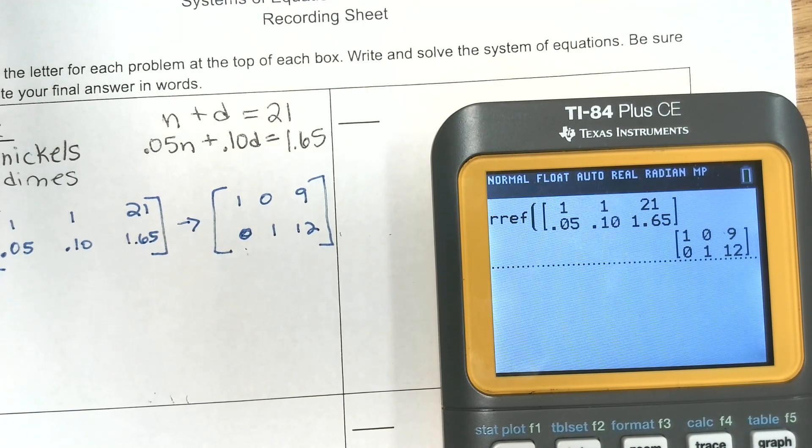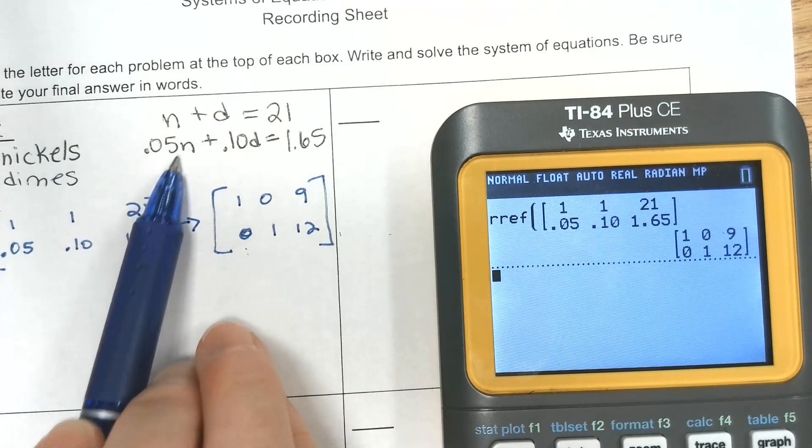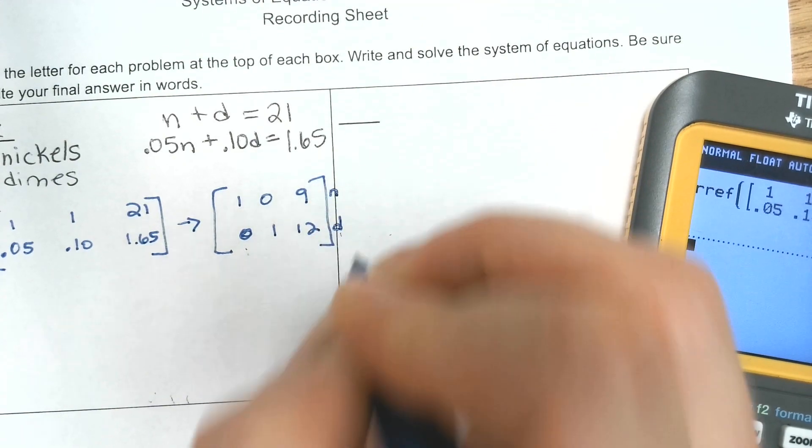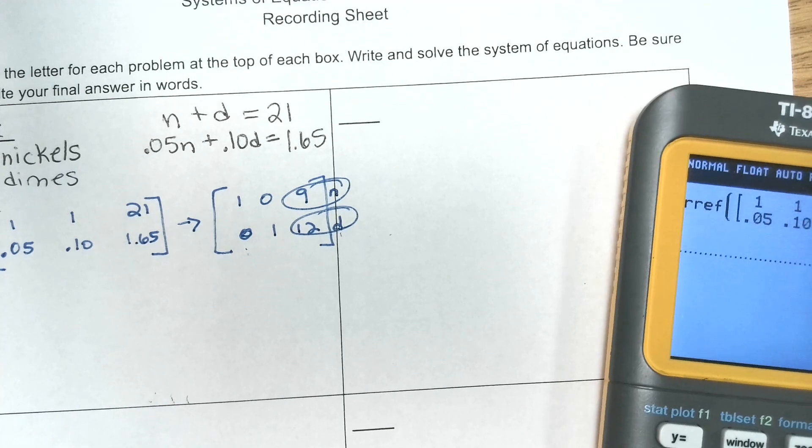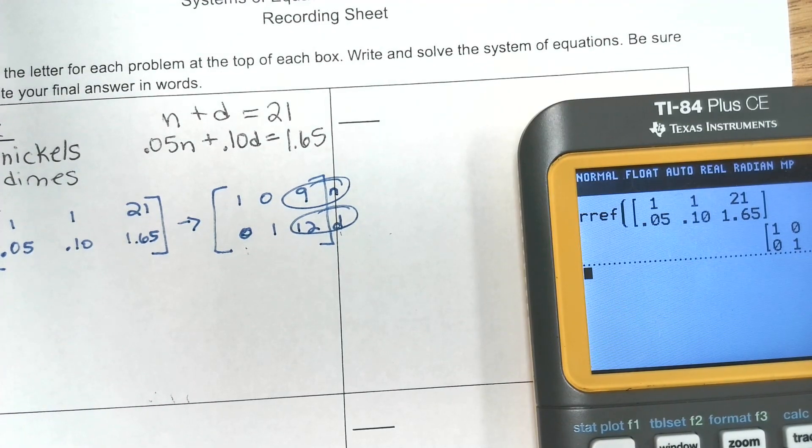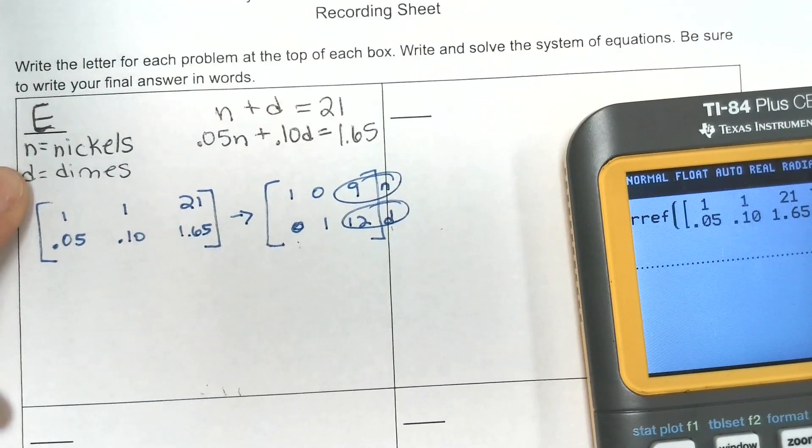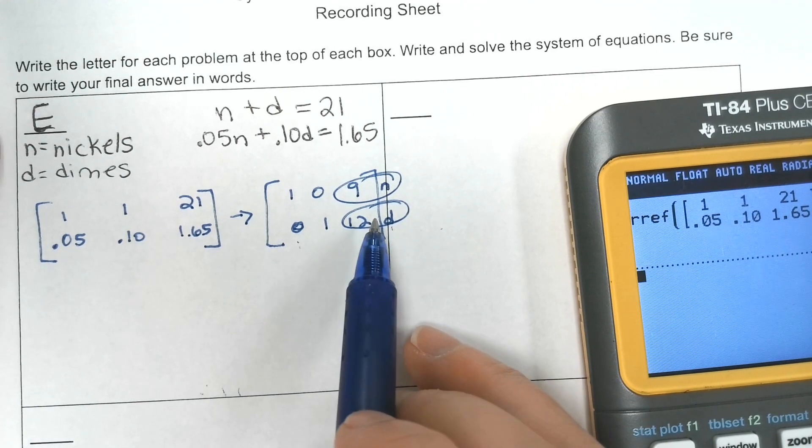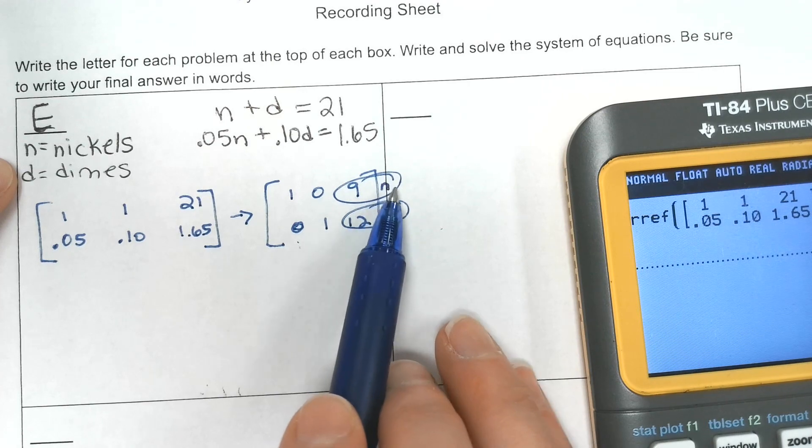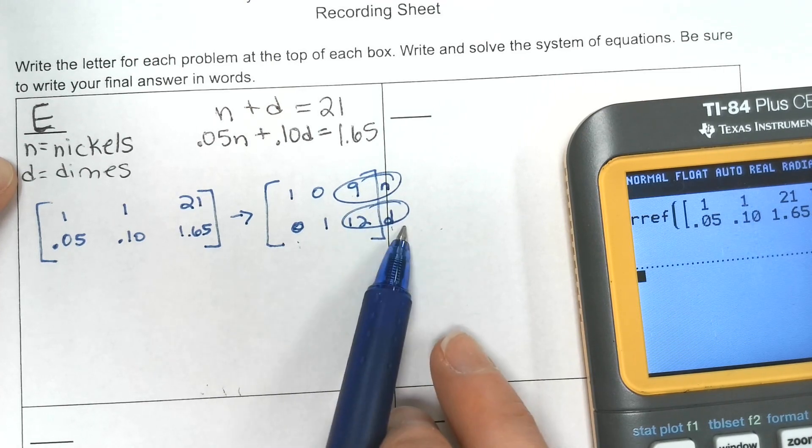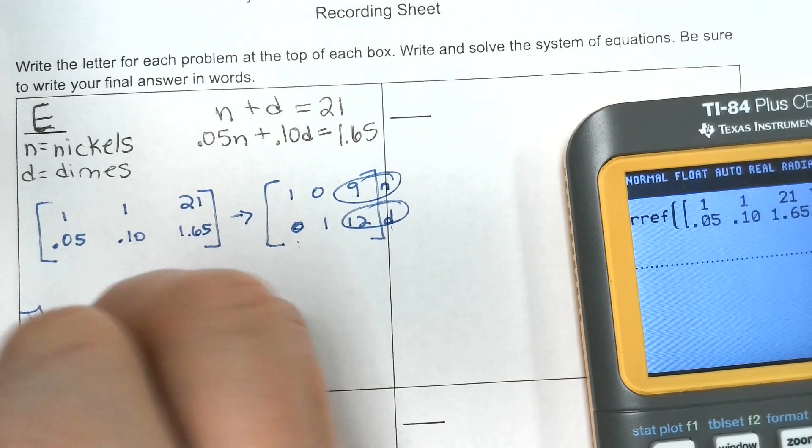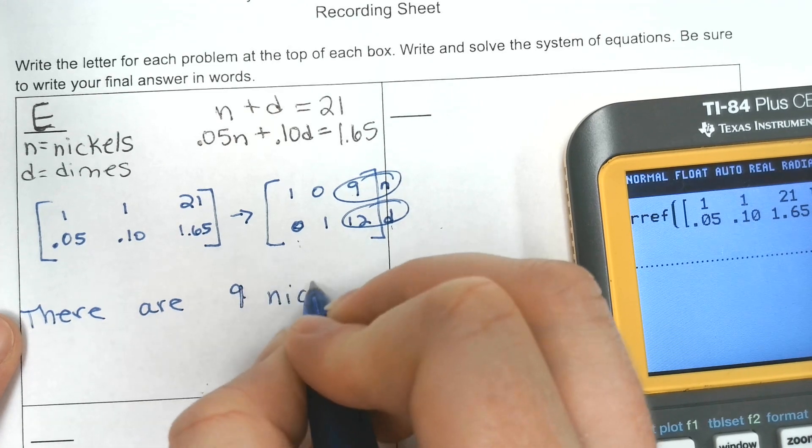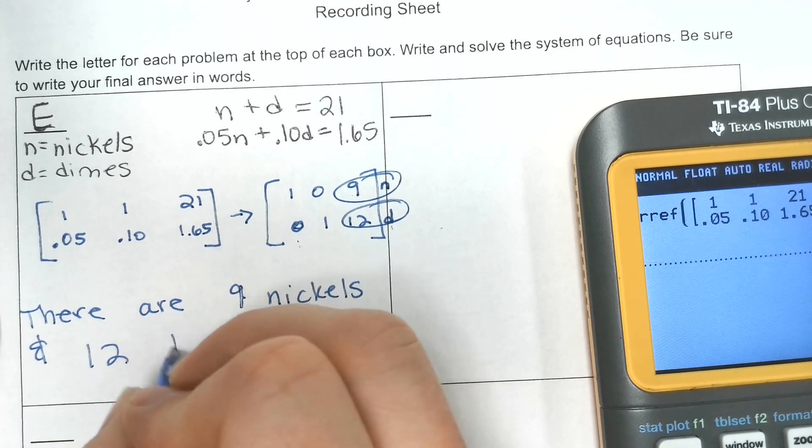So what order does it need to be in? See how this is n, and this is d, so it's going to be n and d. It's talking about, since we wrote our variable down, that's the important part is writing your variable down, what does it represent so that whenever you answer your question, you know what to write. Okay, so there were nine nickels and twelve dimes. I'm going to put there are nine nickels and twelve dimes.